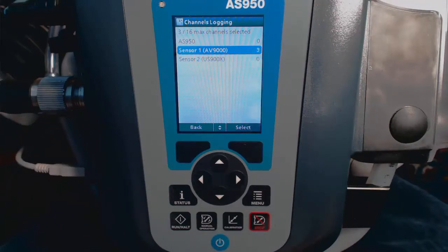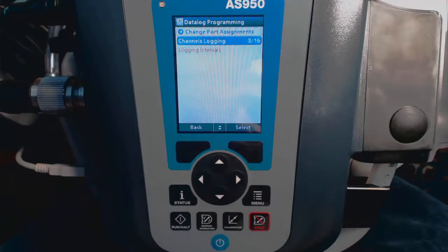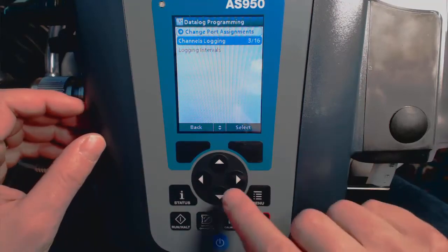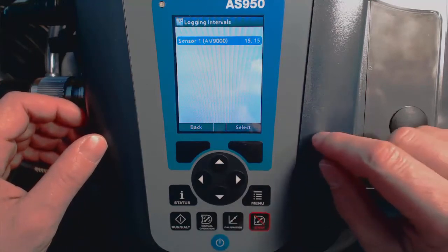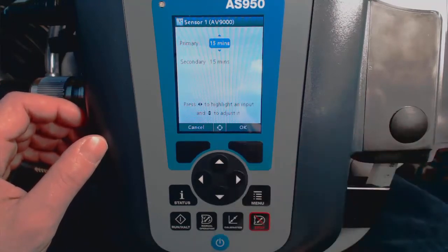Now we'll want to set up the measurement frequency or logging interval. So choose Back, now select Logging Interval, and then select the sensor that you want to set up the logging interval for.